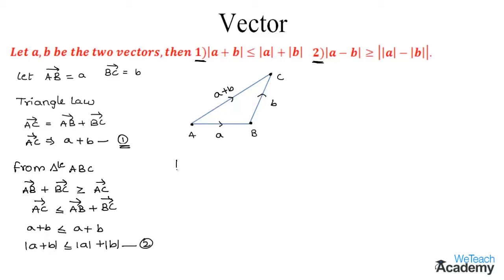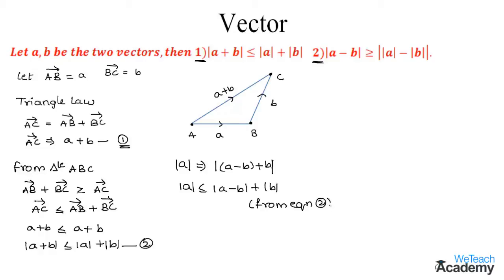First, let us consider |a| and add and subtract b, so the value remains unchanged. We get |a| = |(a - b) + b|. Applying equation two, this gives |a| ≤ |a - b| + |b|. Transferring |b| to the other side, we get |a| - |b| ≤ |a - b|. Let us name this equation three.